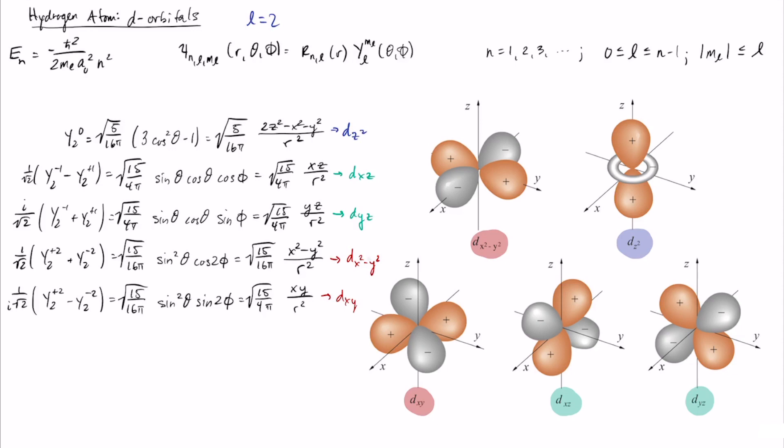And then the only one that has a relatively unusual shape is the dz squared minus x squared minus y squared. This has these sort of strong lobes along the z direction, both with positive in this case, and then this sort of saturn-like ring of negative down here.